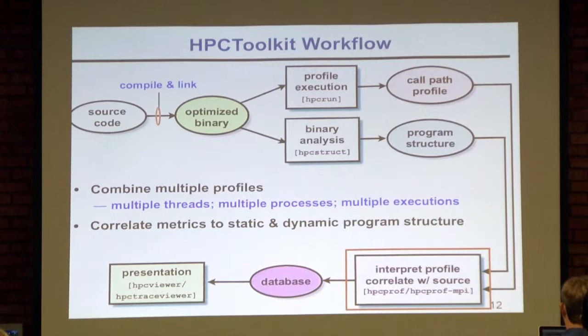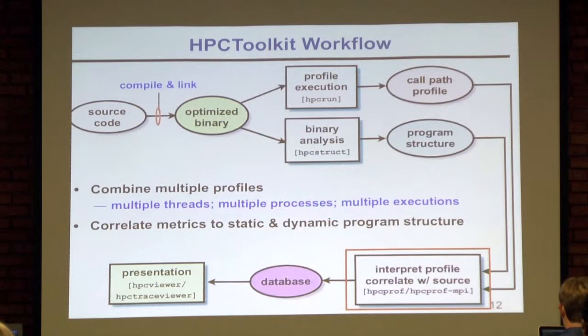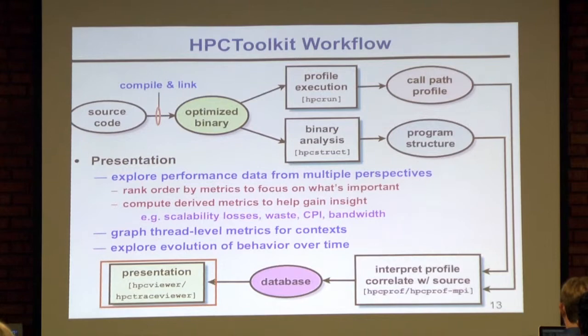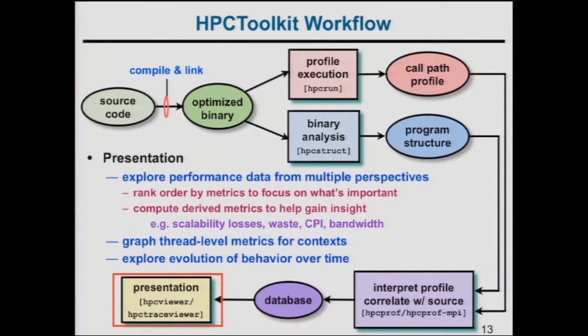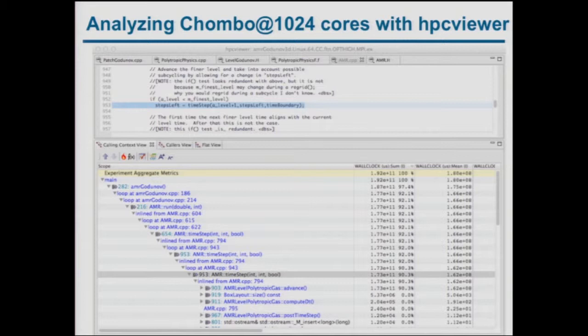This enables combining information about multiple threads, multiple processes, and multiple executions, correlating everything to both static and dynamic structure. We have two presentation tools. You can explore performance data from multiple perspectives and rank metrics by importance — for example, seeing which procedures cost the most time sorted at the top. You can define your own metrics, sort by them, and view data from a code-centric, thread-centric, or time-centric perspective.